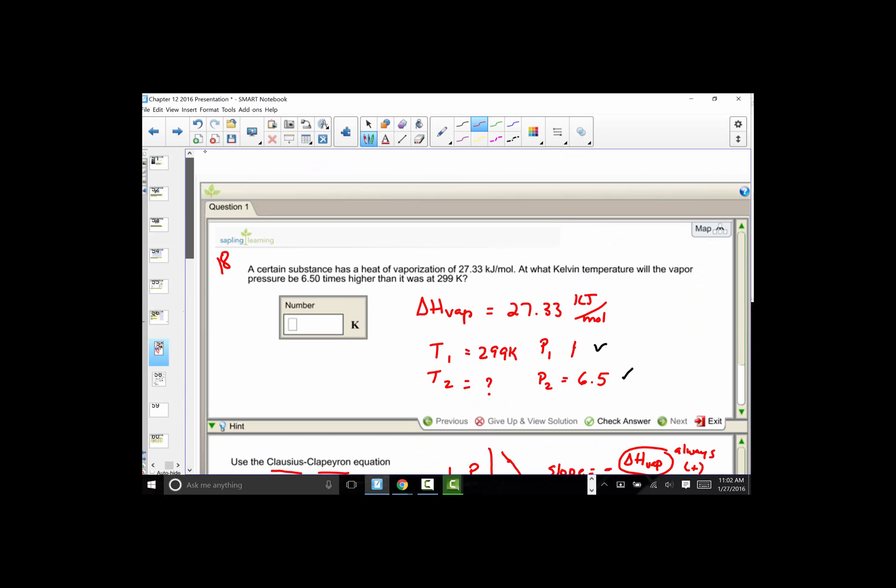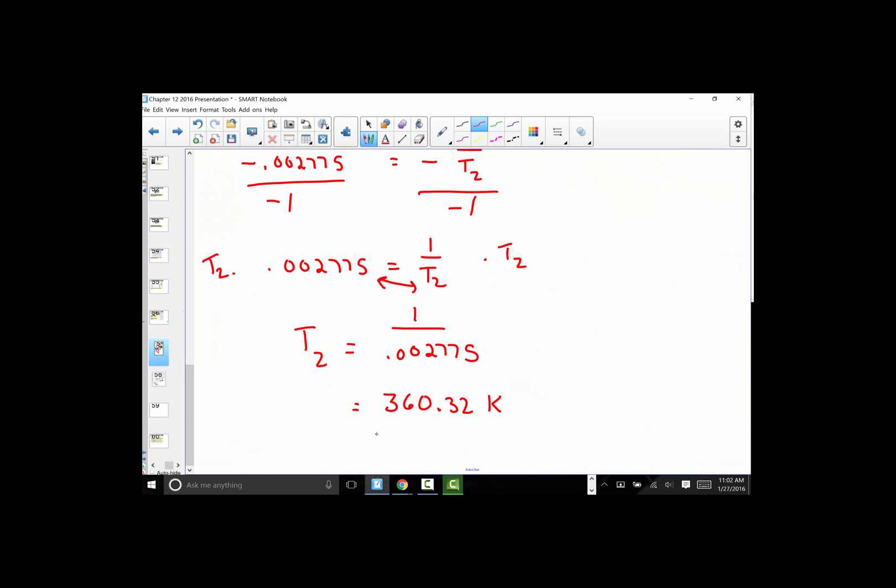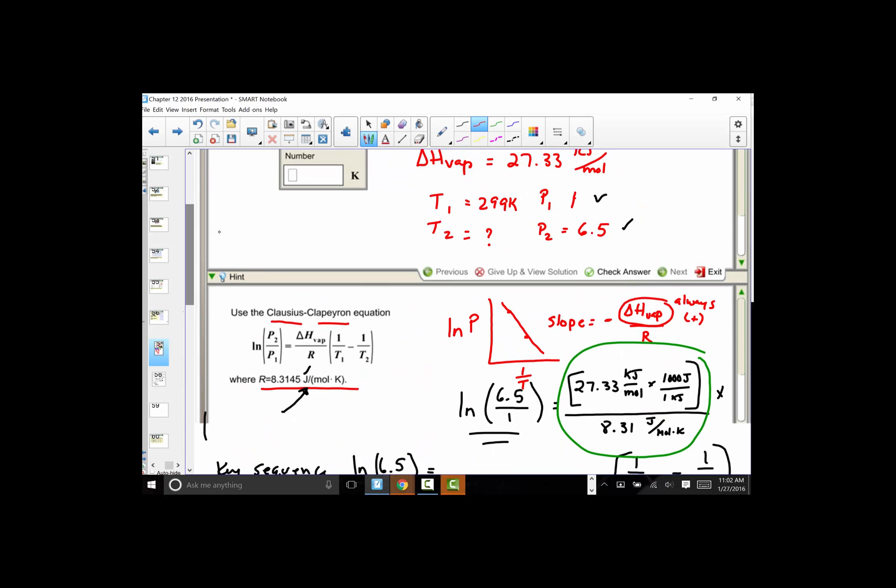Let's consider sig figs. We had two decimals here, two decimals, no decimals on that temperature. So we'd probably have to put 360.32 to keep the decimal numbers, or it may ask you for the Kelvin unit. So just to practice with the equation where we were given all of the information except one target, and we solved the algebra to pull that out. I hope you found this video helpful.